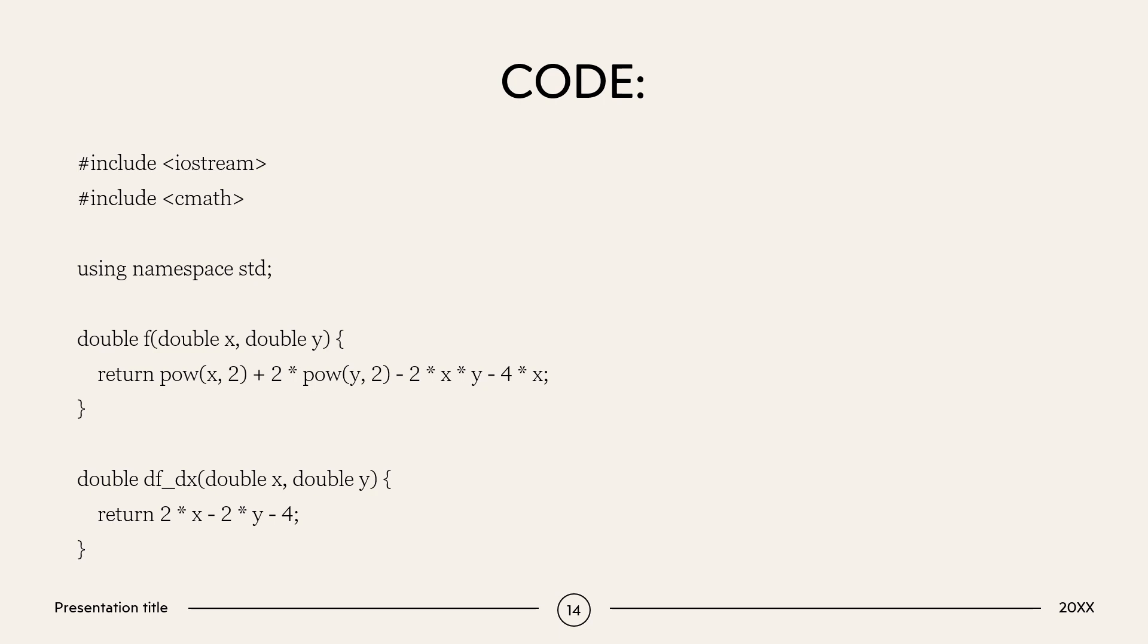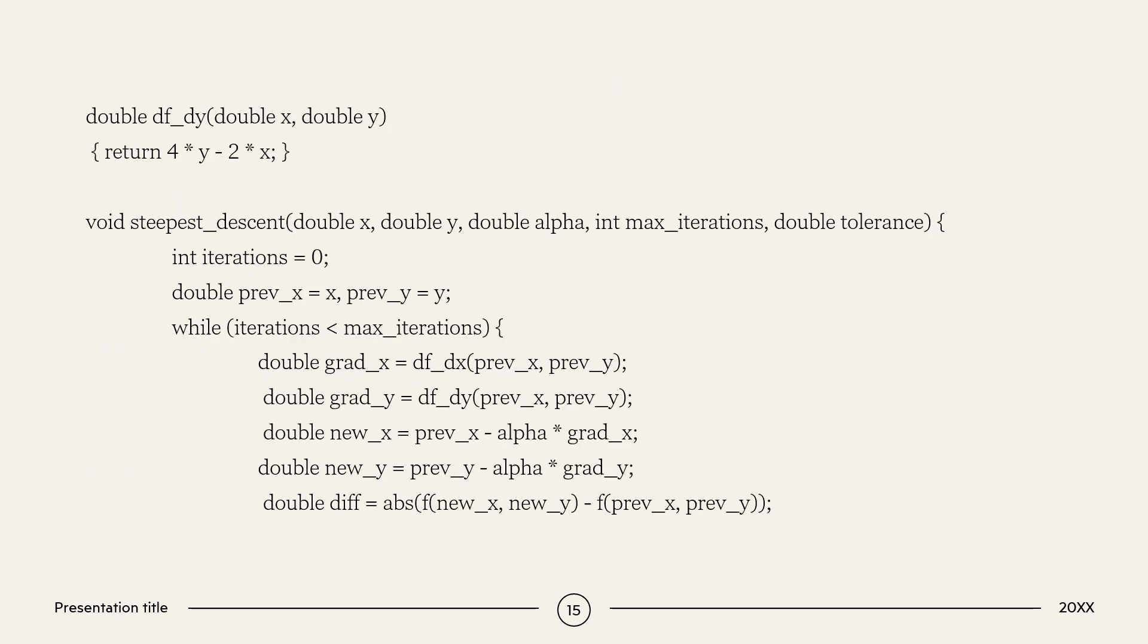So, this goes with the code. Here, the function, given function and this is partial differentiation with x and this is partial differentiation with y. And this is the function for the steepest descent algorithm.